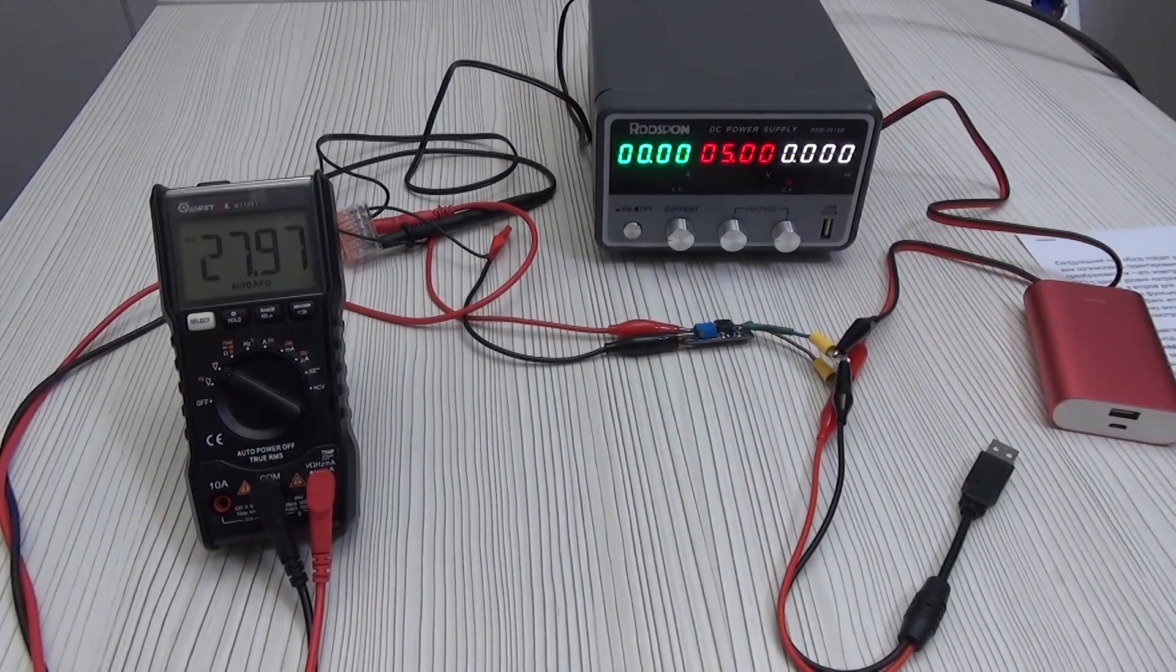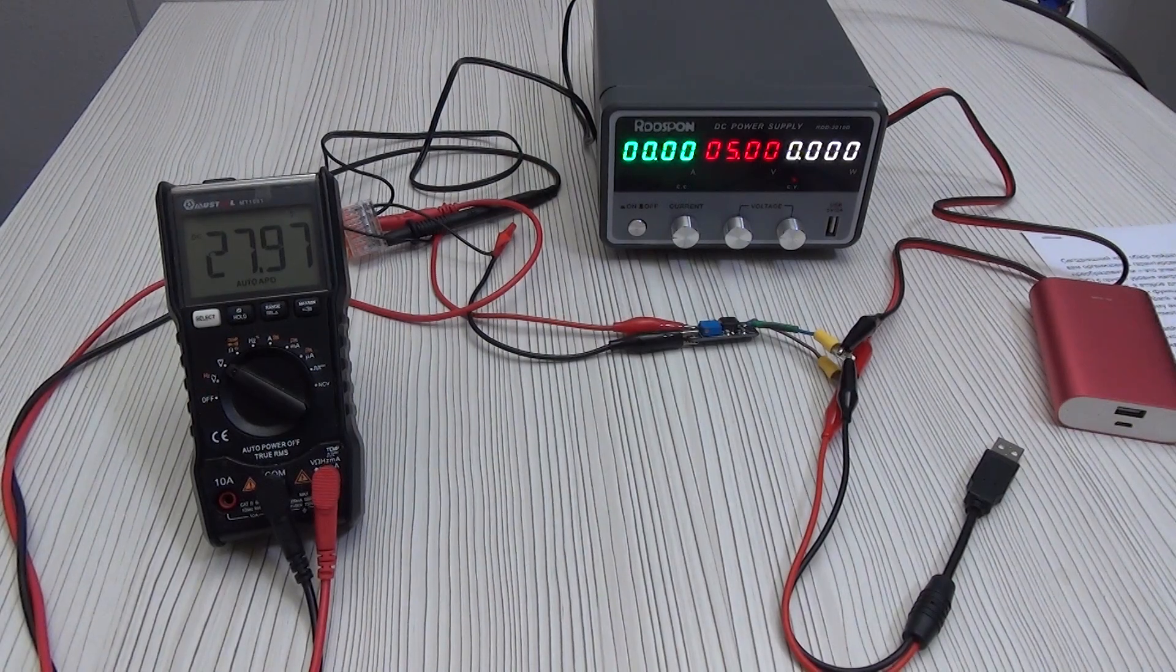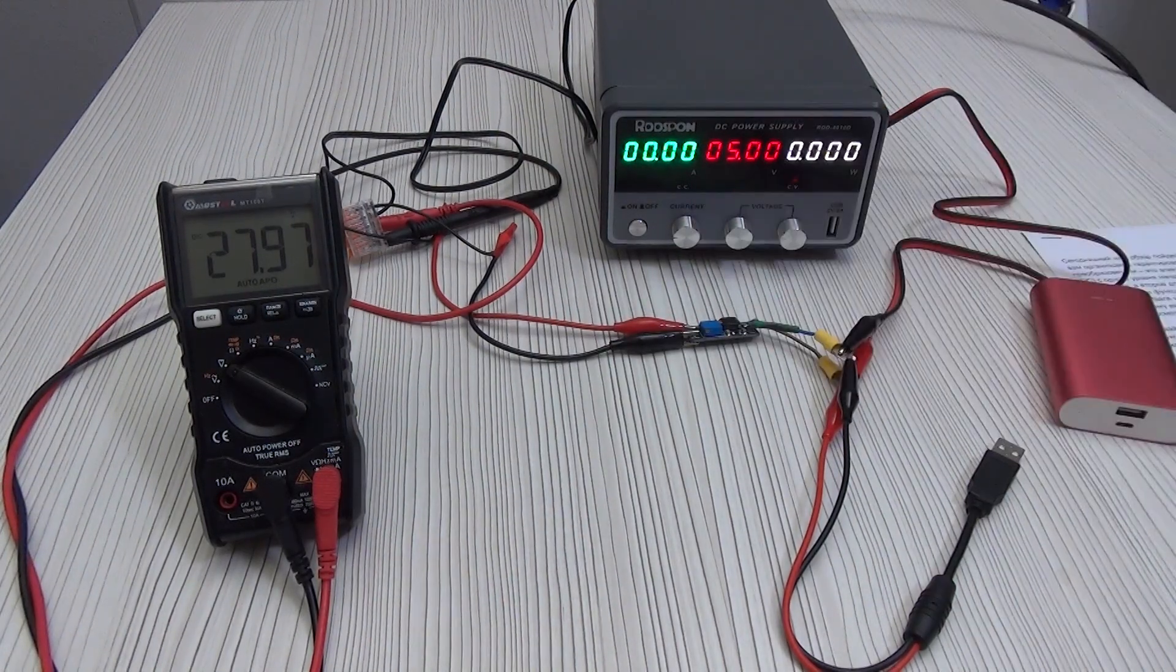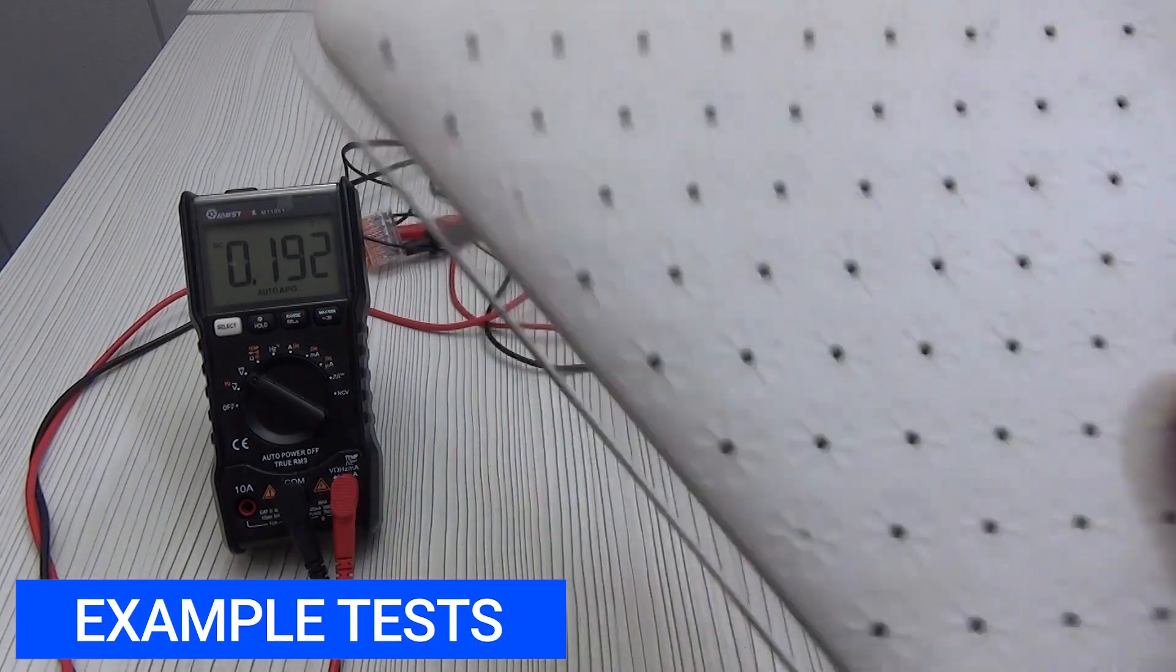The idle current according to the instructions is only 6 milliamps, which is very good for organizing a backup power supply. Let's check what this board can be useful for.